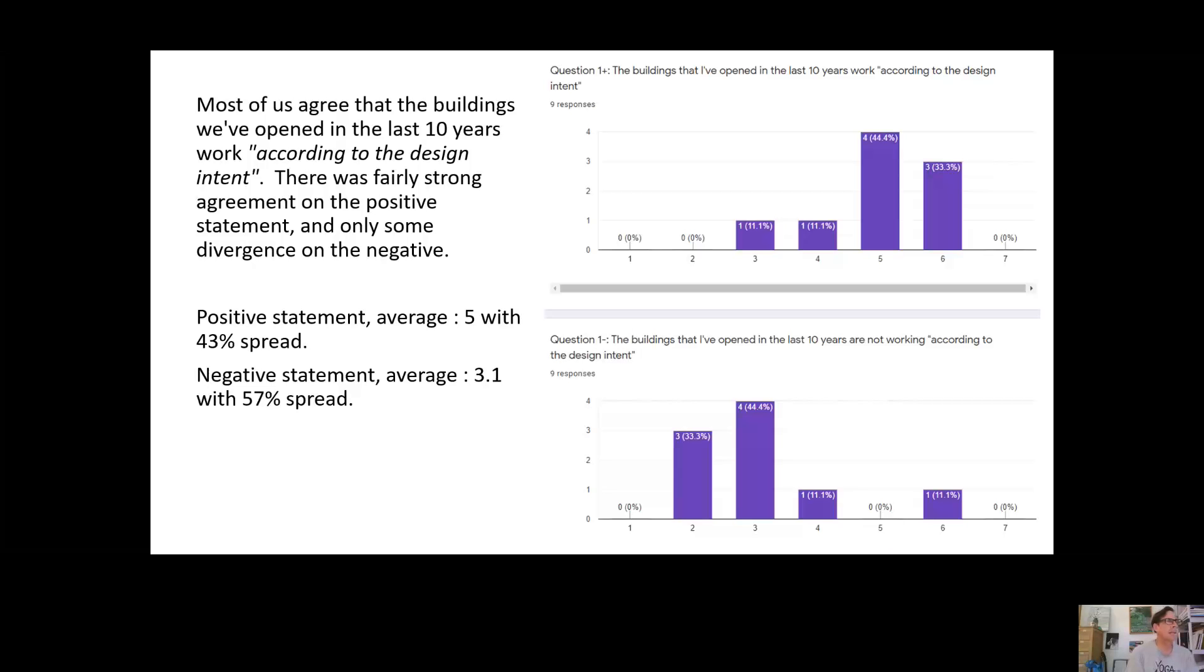So the first question was, the buildings that I've opened in the last 10 years work according to the design intent. We generally agreed with this, and we actually had a pretty strong agreement among all of us. So we agreed with the positive statement, we disagreed with the negative statement. And that amount of spread there, 43% spread, 57% spread, is not bad. You'll see a lot more divergence later on.